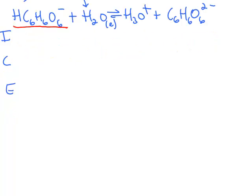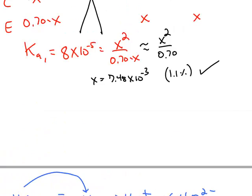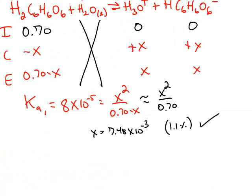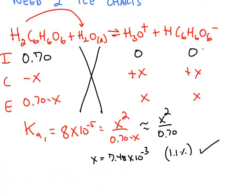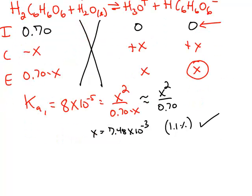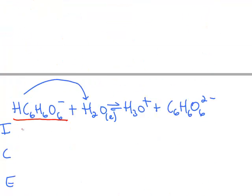HC6H6O6 was not put into the original ICE chart. That one started at a concentration of 0. But the first reaction made x. So our value for x is our starting point in our second ICE chart.